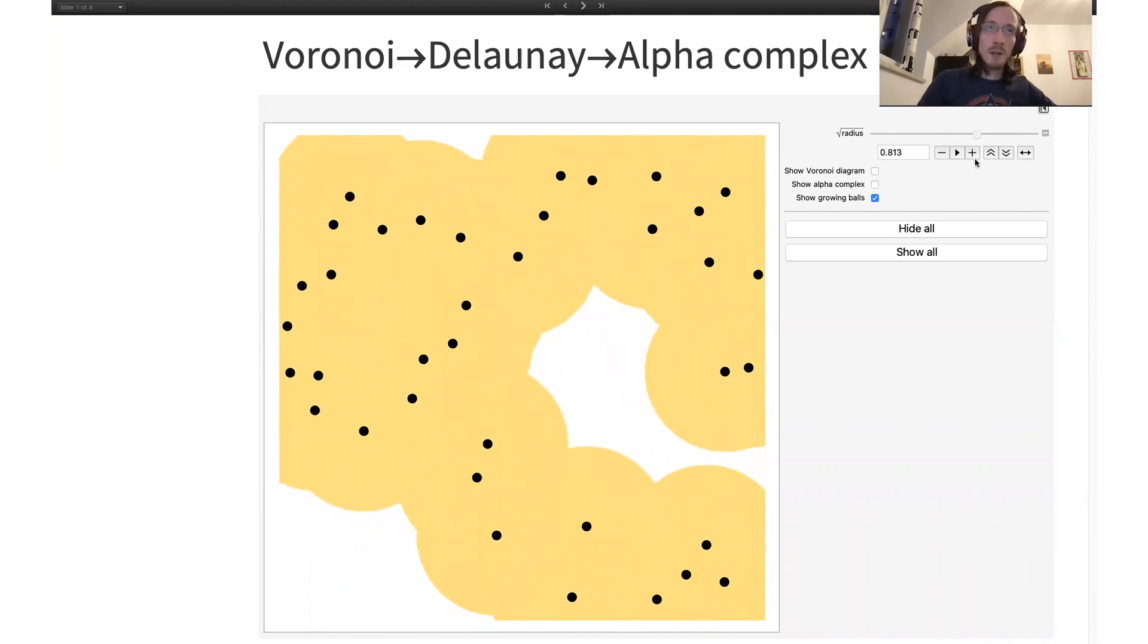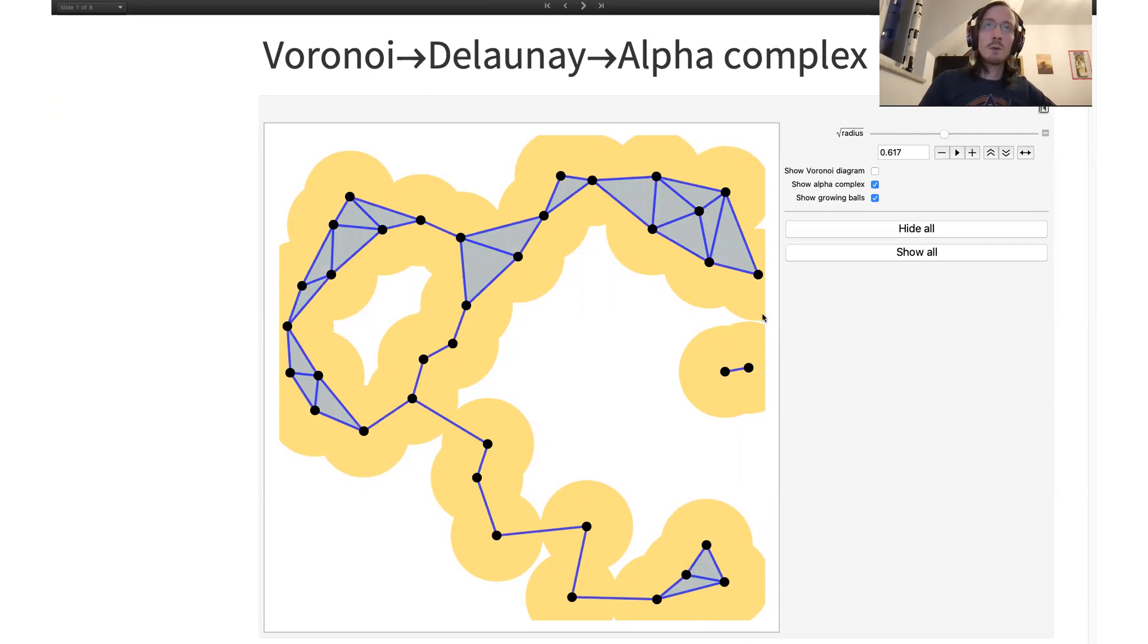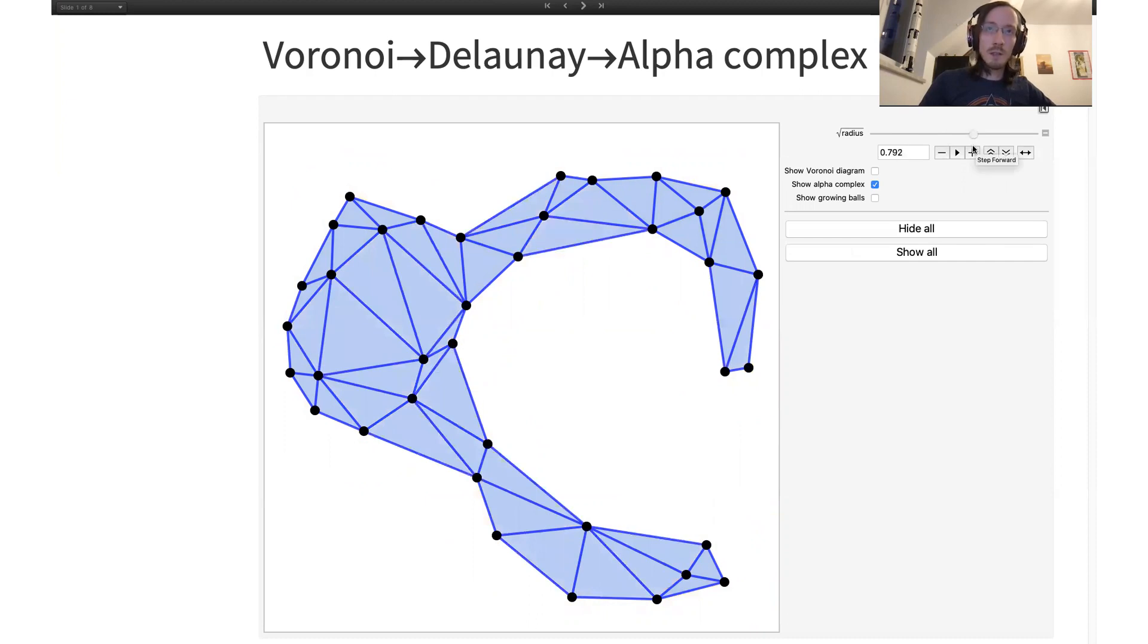This is something that persistent homology studies, and this is all very well defined. But you might imagine that computers are not too happy with this sort of representation, and you might much rather have something discrete or combinatorial, like this blue object, and you would like it to still convey the same message. If I forget about those growing disks, you see that there still is some hole here, and I have some parameters that I can change and then the hole disappears.